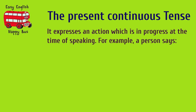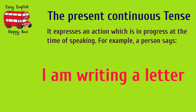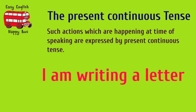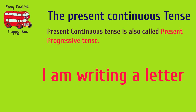For example, a person says, 'I am writing a letter.' It means that he is in the process of writing a letter right now. Such actions which are happening at the time of speaking are expressed by Present Continuous Tense. Present Continuous Tense is also called Present Progressive Tense.